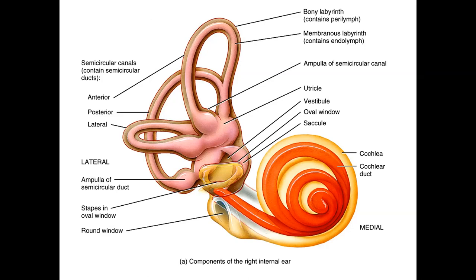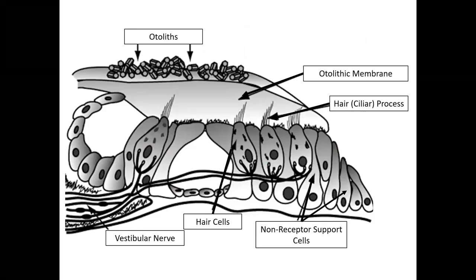We have a labyrinthine system made up of the membranous labyrinth and the bony labyrinth, containing perilymph and endolymph — very similar to the cochlea. There are outcrops at the junction point between the semicircular canals and the vestibule known as the ampulla, which is the area where we have the receptors for the semicircular canals.